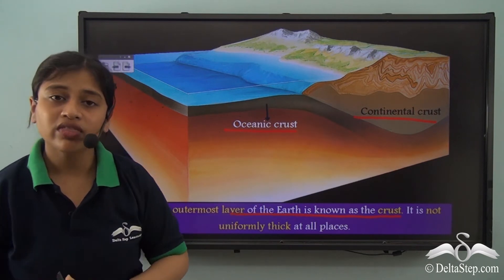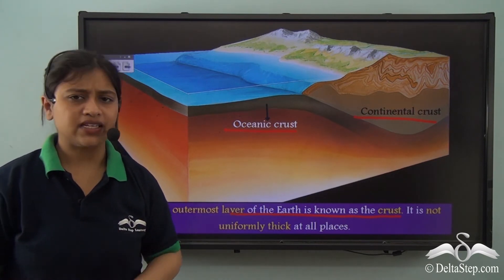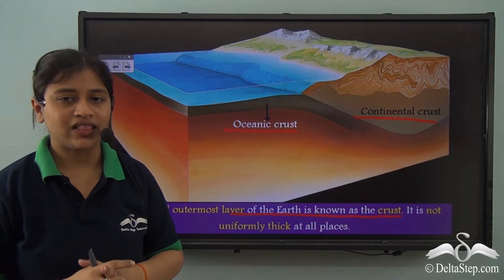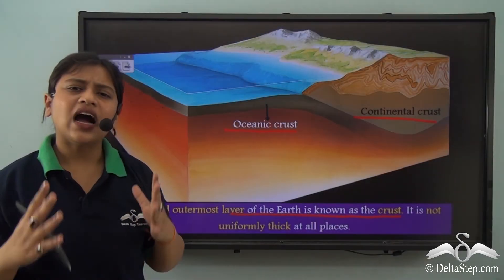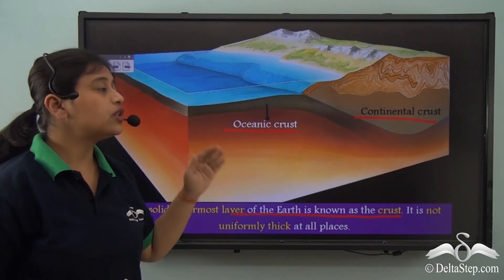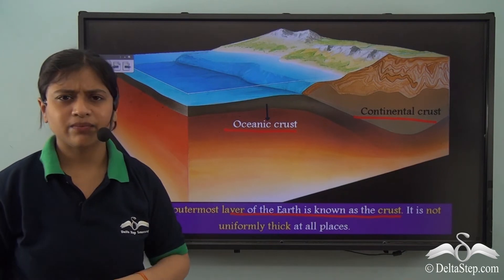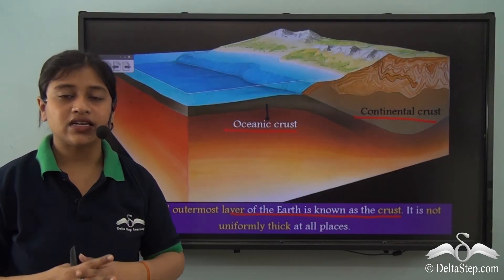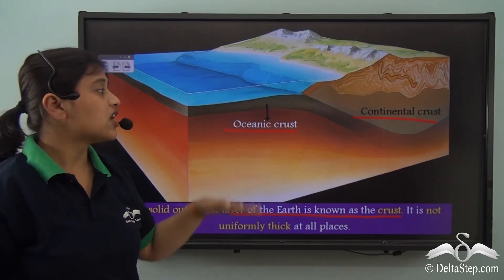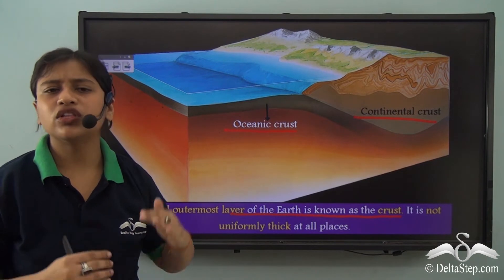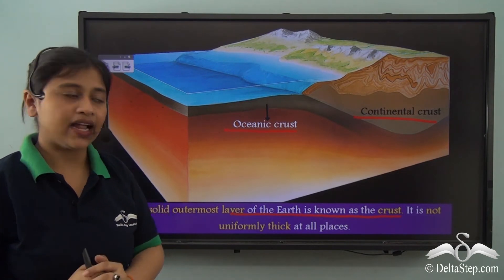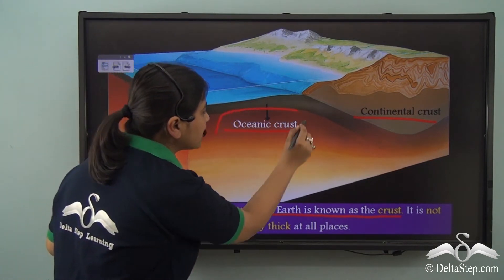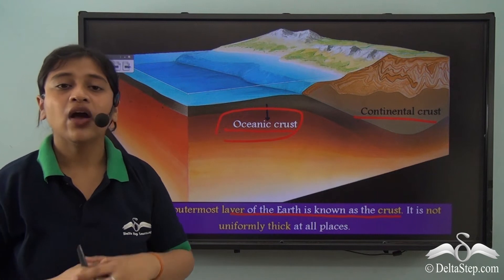The earth's surface comprises one-fourth land while the other parts are covered with water bodies. The earth's crust that falls right below the sea bed or the oceanic bed is called the oceanic crust, as you can see here.